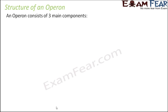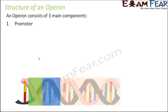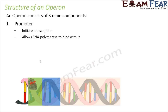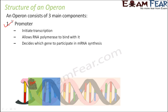Any operon consists of three main components: the promoter, operator, and structural genes. The promoter's purpose remains the same — it initiates transcription and allows RNA polymerase to bind with it. Once RNA polymerase binds, it can cause transcription. The promoter's location decides which will be the coding strand, which the template strand, and which genes will participate in RNA synthesis. This location is recognized by RNA polymerase, initiating transcription.